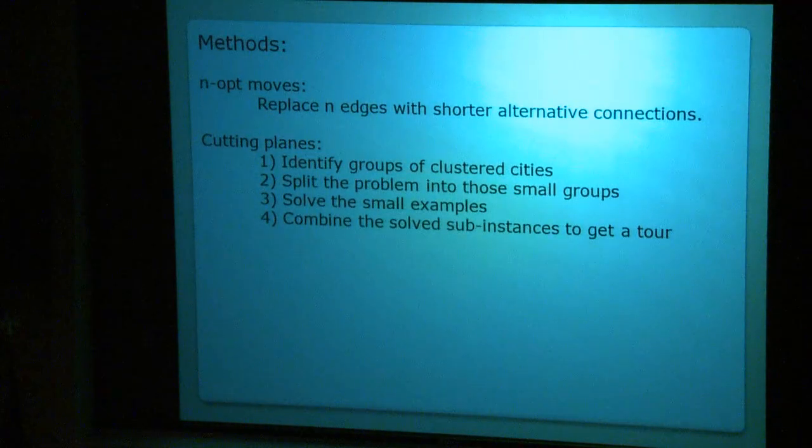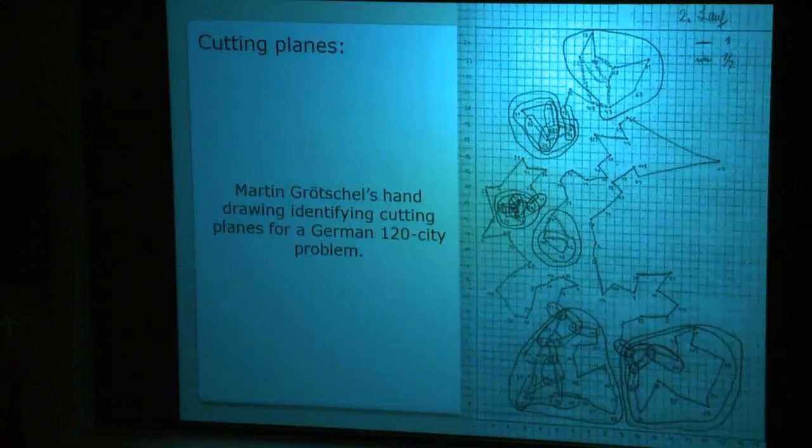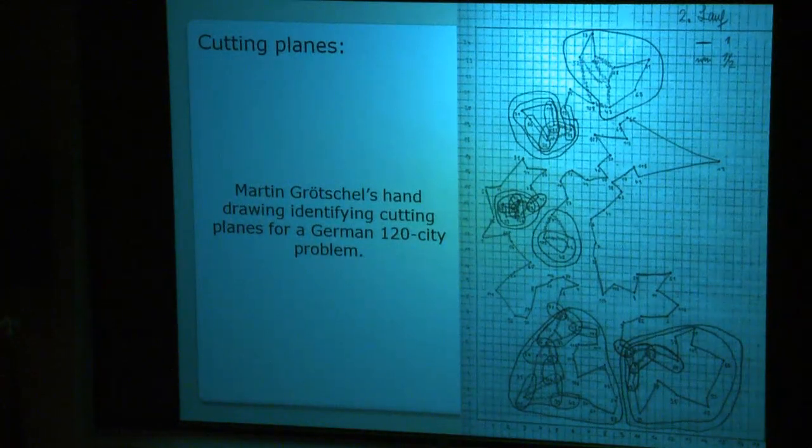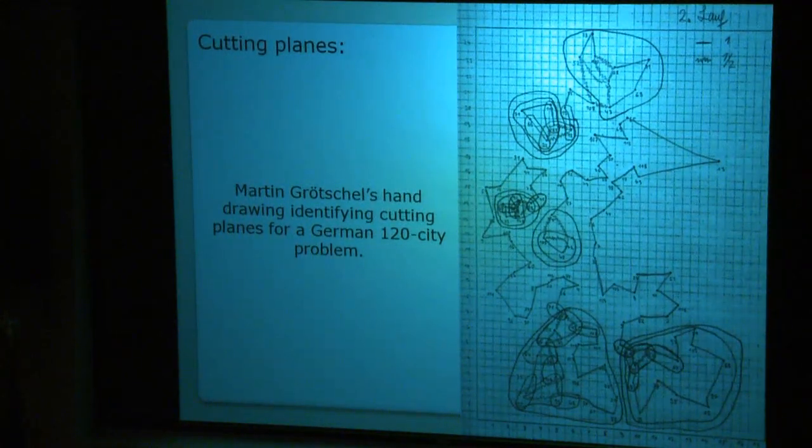Then we move to methods. The first one is n-opt moves. In this case, we come up with a random tour within all our cities, and then we replace n edges, for example 5 or 10, and try to replace them with an alternative solution that hopefully will be shorter. For cutting planes, we take a graph, we identify areas where our cities are close together, then we divide them, try to solve smaller cases where we don't have as many possibilities, and then we combine everything together. It was developed by Dantzig, Fulkerson and Johnson, and here is a drawing of one of the examples.